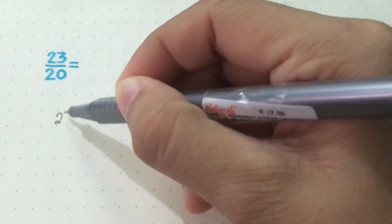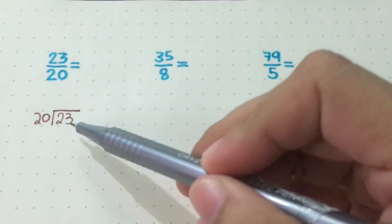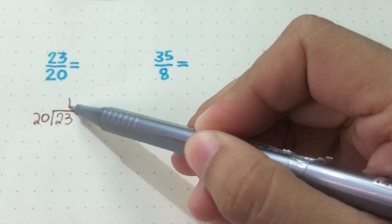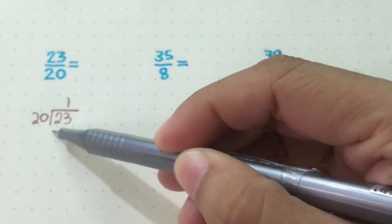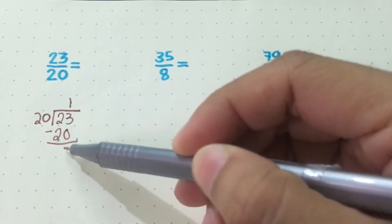So the numerator is 23 and divide it by the denominator 20. So 23 divided by 20, you get 1. 20 times 1, that is 20, then subtract. 23 minus 20, you get 3.